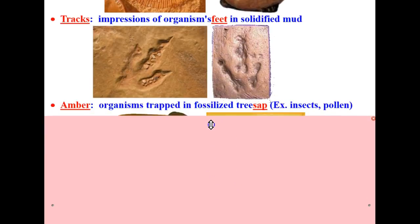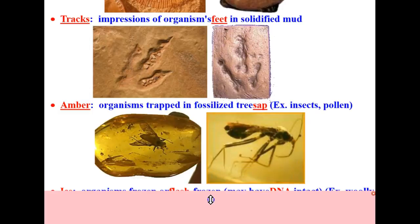Amber is another type of fossil. These are organisms trapped in fossilized tree sap, for example, insects or pollen.